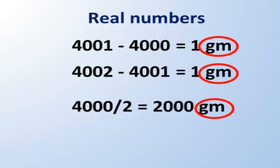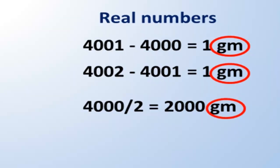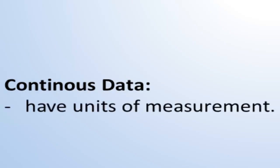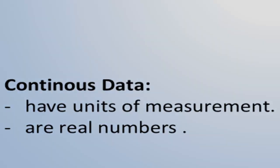To sum up, metric continuous data results from measurements and they have units of measurement. The data are real numbers. These properties of both types of metric are markedly different from the characteristics of nominal and ordinal data.